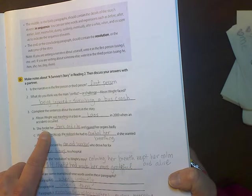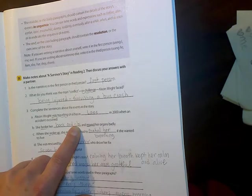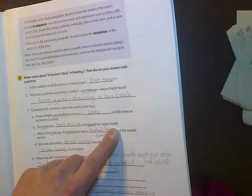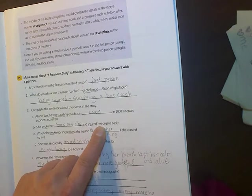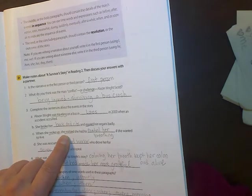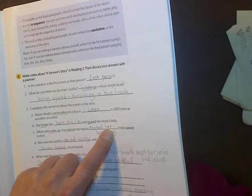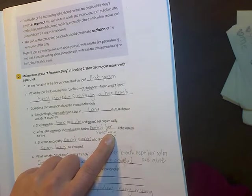B. She broke, simple past, because you break something in a moment. She broke her back and ribs. And what else did she do, simple past? She injured her organs badly. These are things that happened in a moment and they're done. C. When she woke up, simple past, she realized, simple past, she had to control her breathing if she wanted to live.